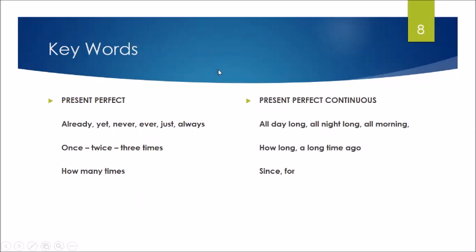The second characteristic that we are going to identify: the key words. For the present perfect we have already, yet, never, ever, just, always, once, twice, three times, how many times. And for the present perfect continuous: all day long, all night long, all morning, how long, a long time ago, since and for.